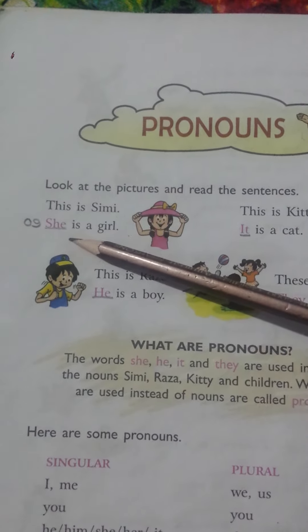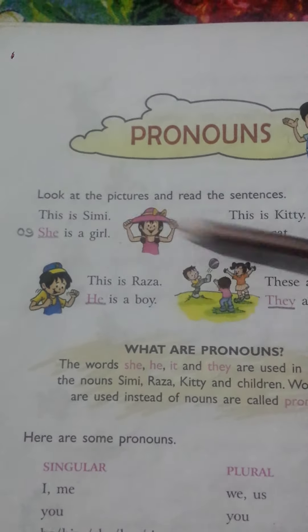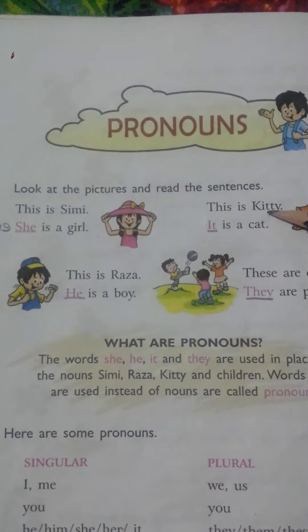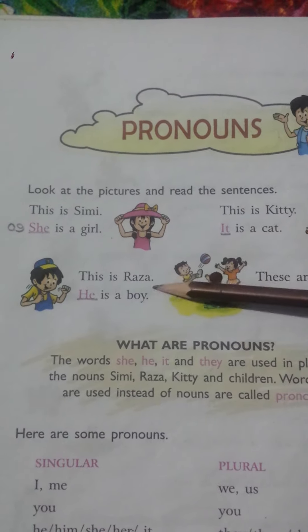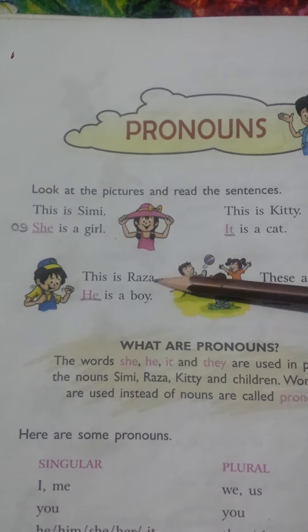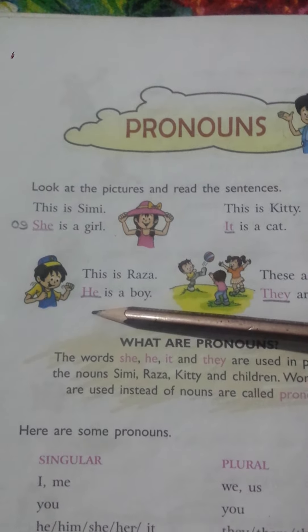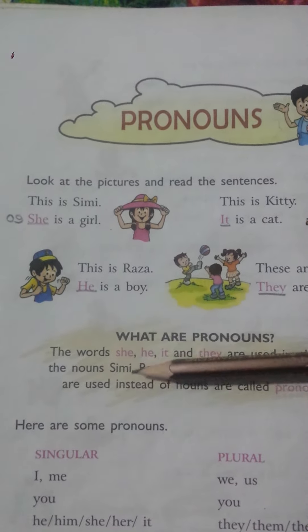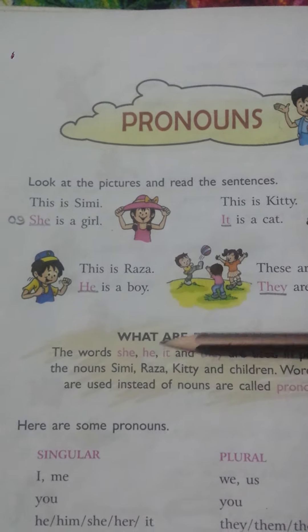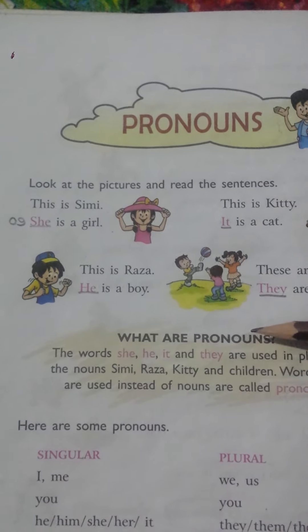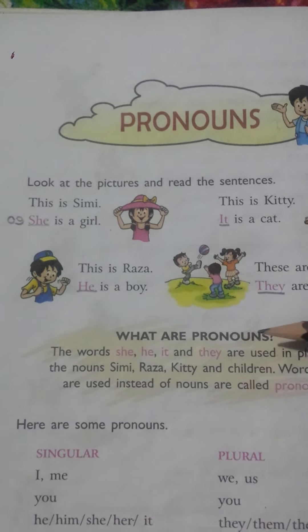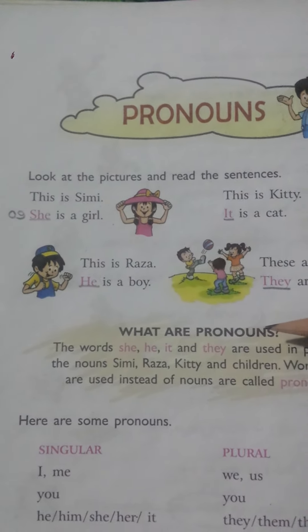Simi's replacement is she. Kitty's replacement is it. Raza's replacement is he. So she, he, it, they are pronouns. Okay, Class One.